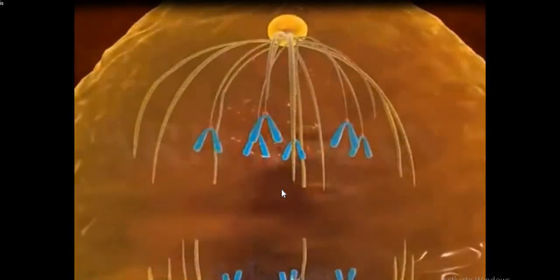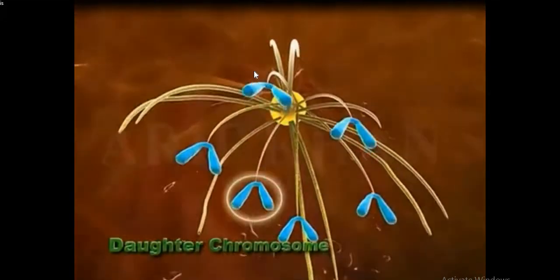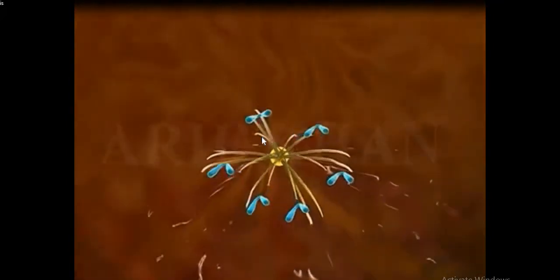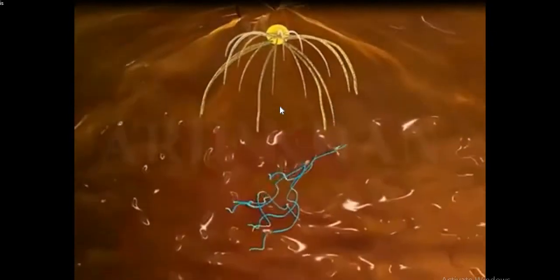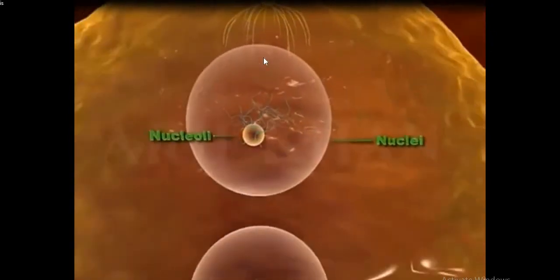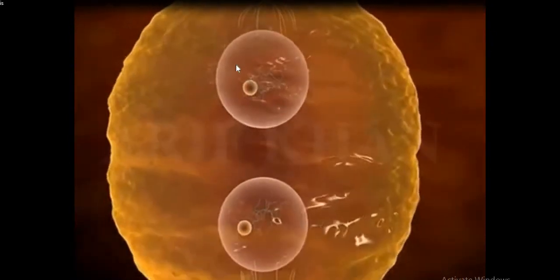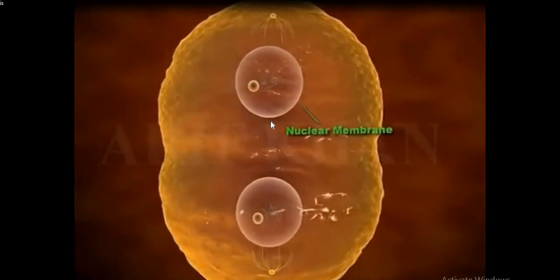After anaphase ends, telophase will come. In telophase, these chromatids will detach themselves from the spindle fiber, and the spindle will get reduced as well as the formation and reappearance of nucleus and nuclear membrane will take place.